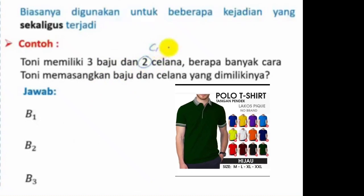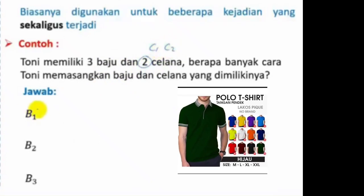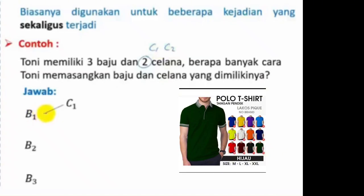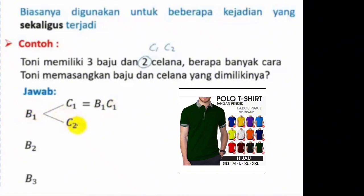Baju 1 bisa dipasangkan dengan celana 1, sehingga diperoleh pasangan B1 dengan C1. Atau baju pertama bisa dipasangkan dengan celana kedua, sehingga pasangannya adalah B1 dengan C2. Begitu juga dengan baju kedua, baju kedua bisa dipasangkan dengan celana pertama, sehingga diperoleh pasangan baju kedua dengan celana ke-1.